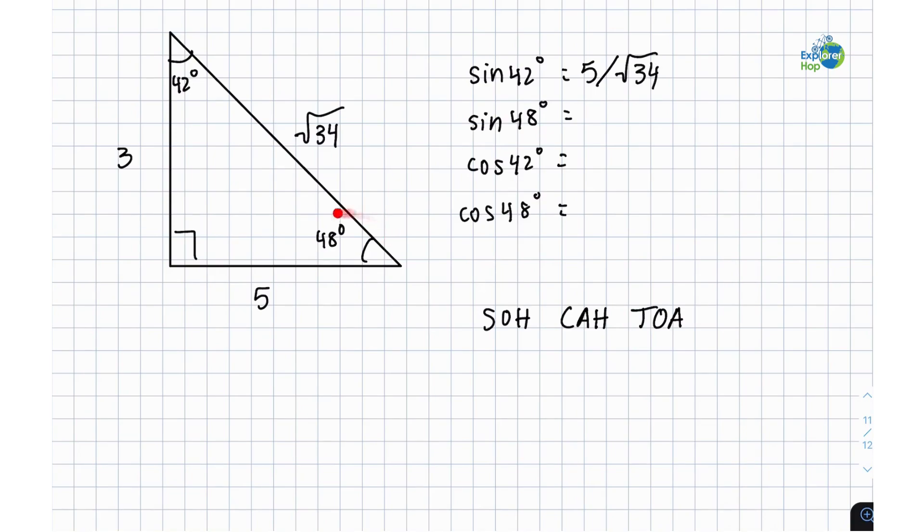Sine of 48 is over here which means the opposite side is 3, so sine of 48 is going to be 3 over hypotenuse which is root 34.